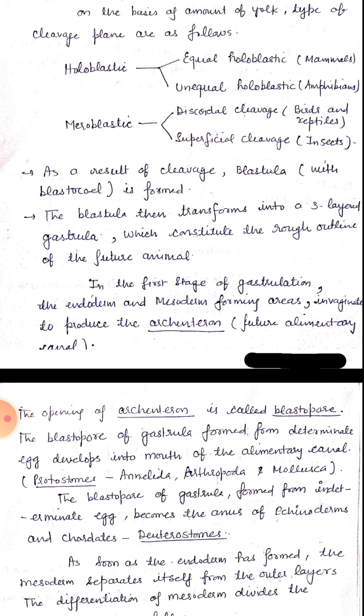Cleavage planes are of two types: holoblastic and meroblastic. Holoblastic means complete cleavage, which is again of two types: equal holoblastic and unequal holoblastic. Equal means when the size of every blastomere is more or less equal, and unequal when the size of blastomeres are unequal — the blastomeres towards the animal pole are smaller in size compared to those towards the vegetal pole.